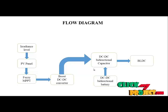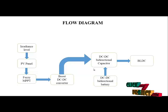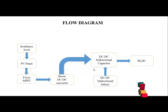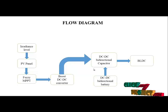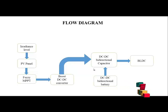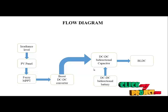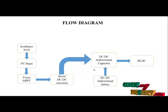After the PV panel inputs are set based on the two conditions, fuzzy MPPT is applied. The fuzzy MPPT generates pulses based on maximum power point tracking. Using the fuzzy method, pulses are generated to determine which switch is on and which is off — T1 will be on and T2 will be off. The value 0 means off and 1 means on.